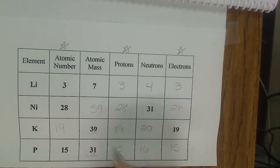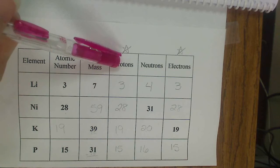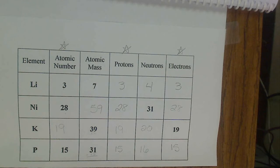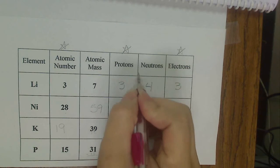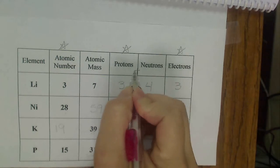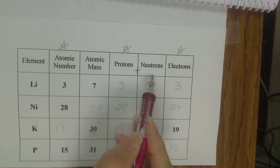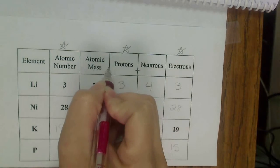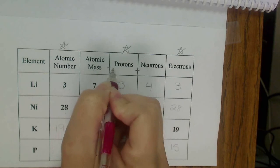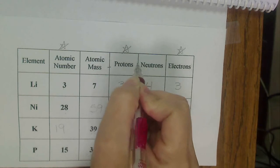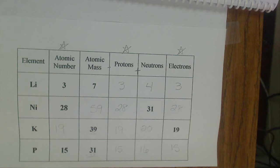That's how we fill out a chart without using our periodic table. Atomic number, protons, and electrons all are the same. To figure out atomic mass, I add my protons and my neutrons. To figure out my neutrons, I subtract my atomic mass minus the protons equals the neutrons. I hope this helps.